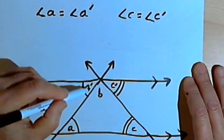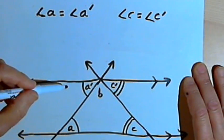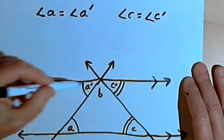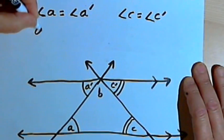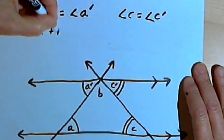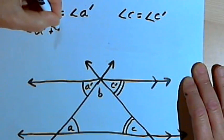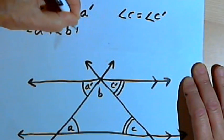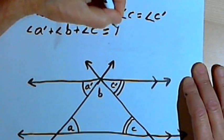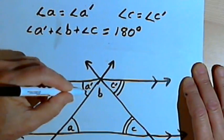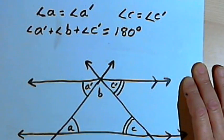Now looking at angles A prime, B and C, we notice that they form a straight line along that parallel line at the top of the triangle. So angle A prime plus angle B plus angle C add up to 180 degrees. That's a straight line. I'm sorry, that should be C prime.